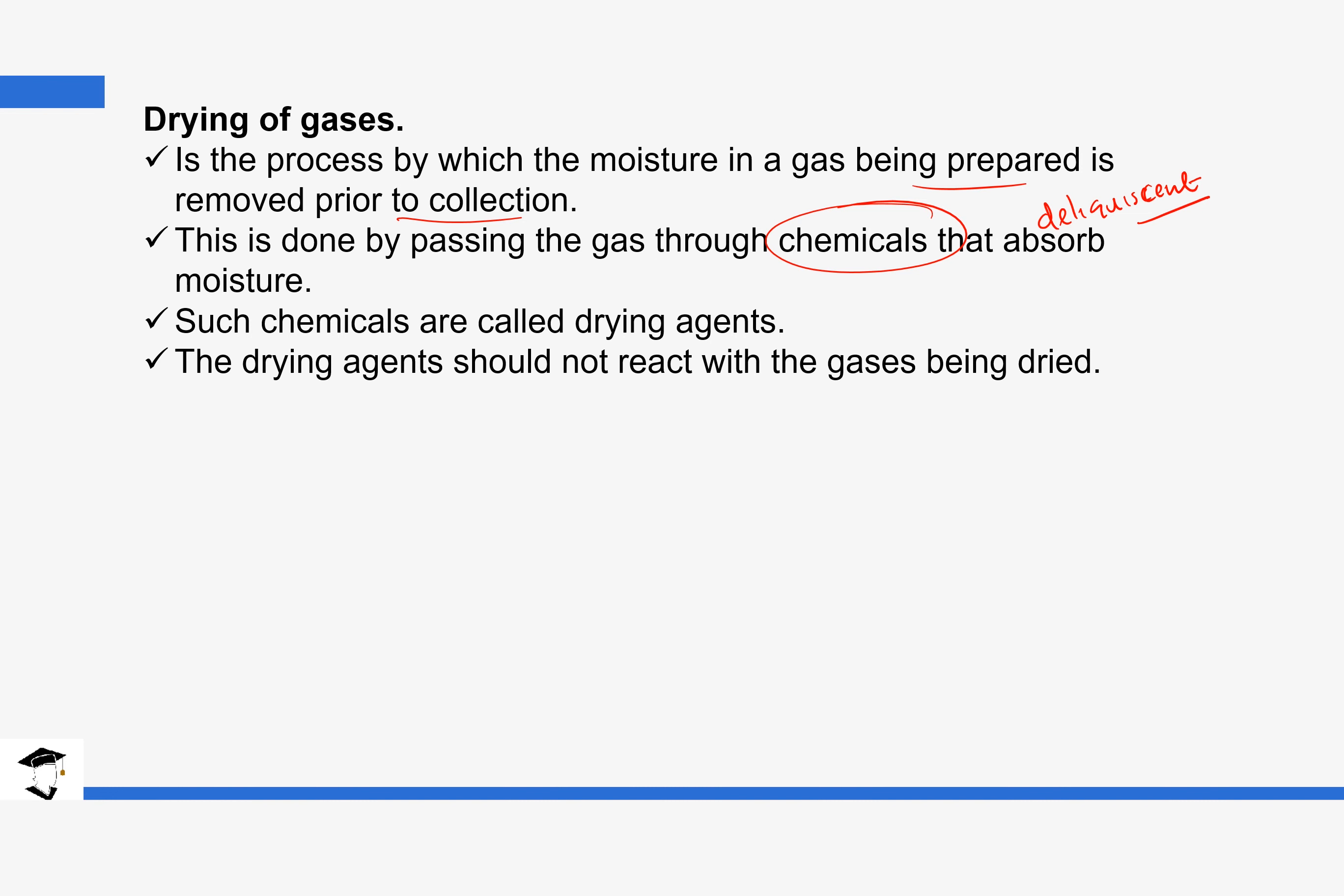And they are usually mostly drying agents. And this drying agent must not react with the gases that are being dried. Otherwise, if they react to the gases being dried, we are not going to get our final gas. Examples are anhydrous calcium chloride, concentrated sulfuric acid, and calcium oxide.